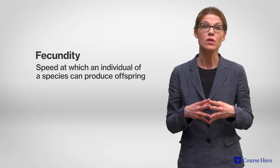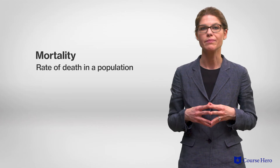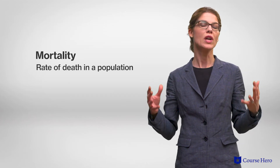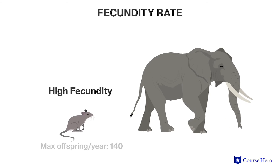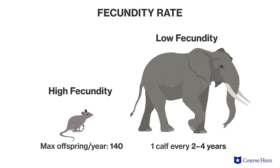An important consideration when examining the life history of a species is the rate of reproduction. This is affected by fecundity, the rate at which an individual of a species can produce offspring, and mortality, the rate of death in a population. Fecundity varies greatly by species. For example, a female house mouse has a high fecundity with the ability to produce 140 offspring a year, whereas a female elephant has a low fecundity and only produces one offspring every 2 to 4 years.